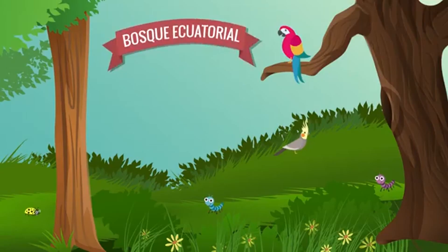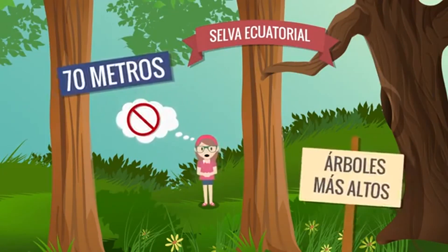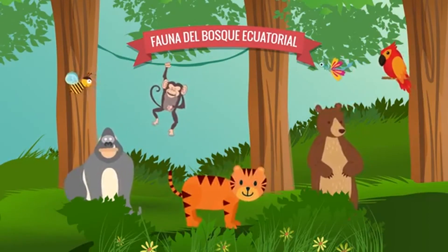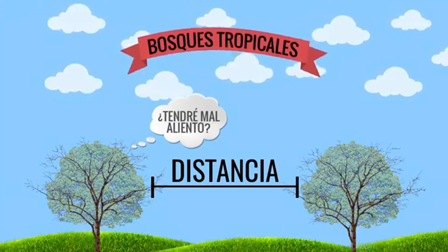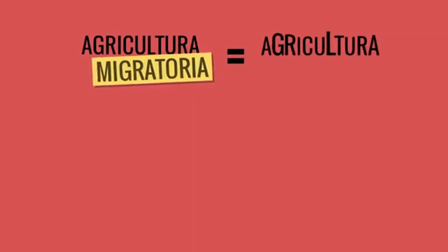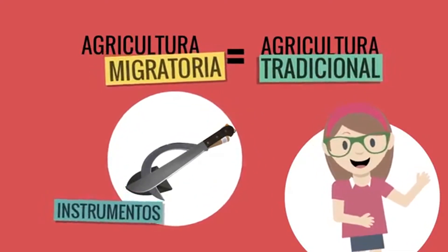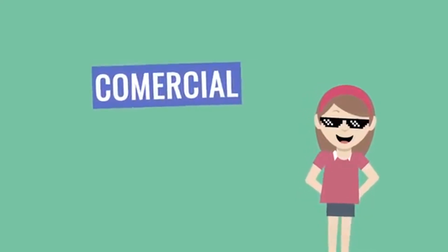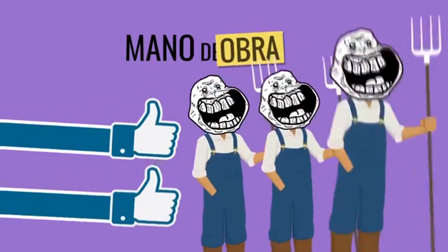¡Hoy aprendimos que! El bosque ecuatorial se caracteriza por la gran variedad de especies vegetales y animales, y los árboles mayormente alcanzan los 70 metros de altura. Las especies se organizan de acuerdo a las zonas donde mejor se adapten. El bosque tropical se encuentra en zonas con altas temperaturas durante todo el año, con lluvias que influyen en la vegetación, y presenta menor diversidad de especies. La agricultura migratoria es tradicional y emplea instrumentos sencillos, mientras que la agricultura moderna es más comercial, produce y exporta a grandes volúmenes, emplea mucha mano de obra y utiliza técnicas modernas.